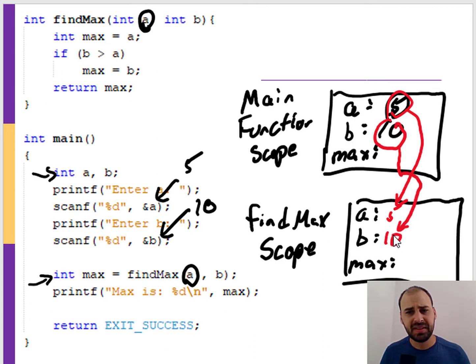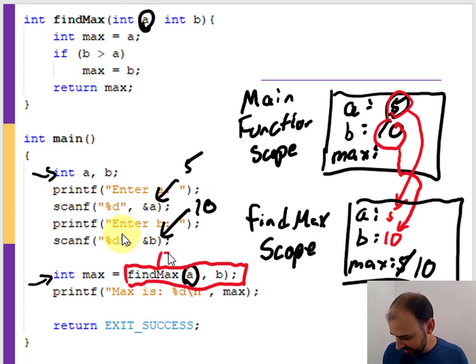We have our logic here, so max gets set to a, which is 5. And then we say, is 10 greater than 5, which it is. So then we hit this line and max gets set to 10. Then we're returning max. Because we're setting this max down here equal to that result, this returns value 10, so we're going to return 10 and print out 10.